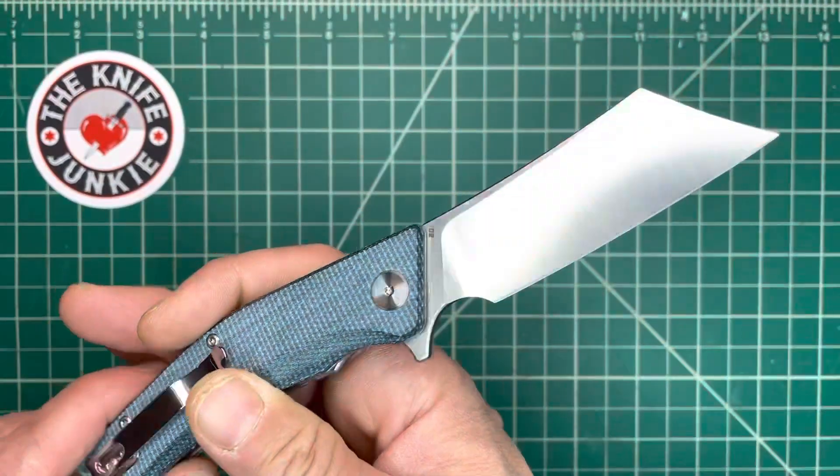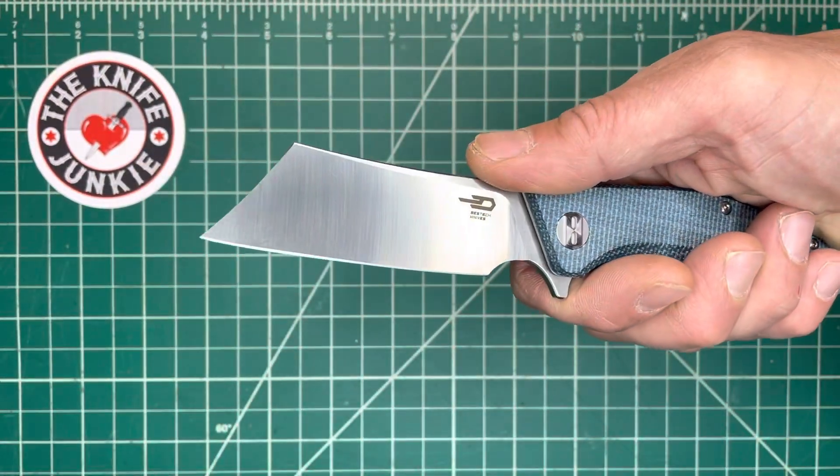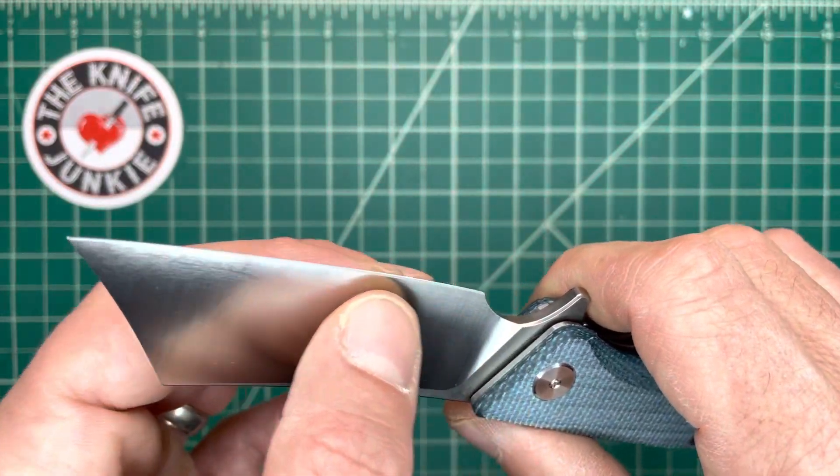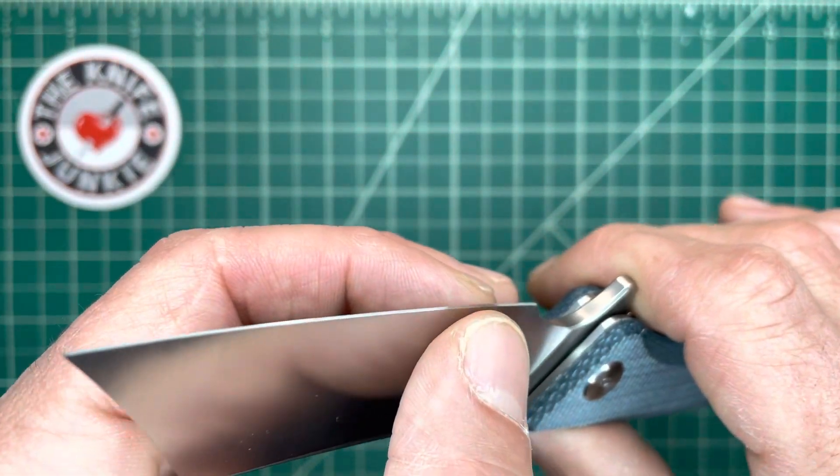And oftentimes when I see a blade that looks like this, I really want a hollow grind. But this is nice and thin, and it's slicey.